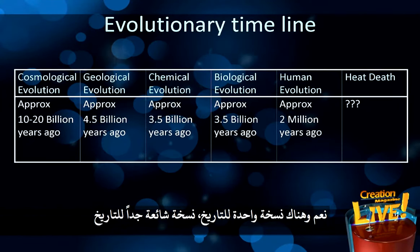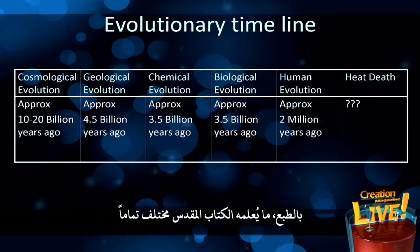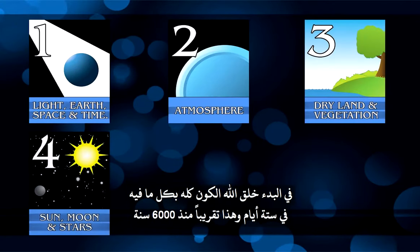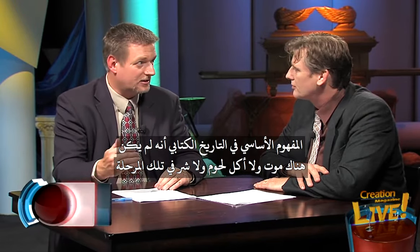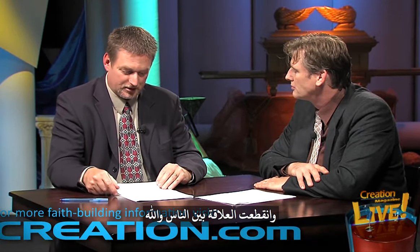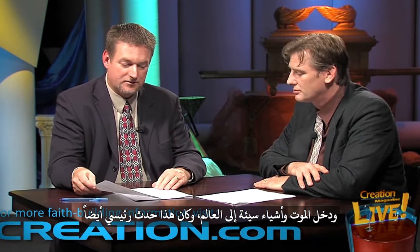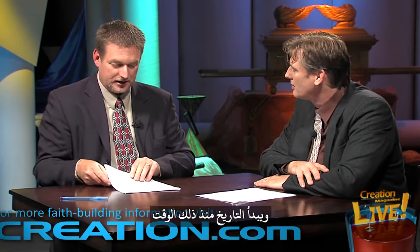That's one version of history — a very popular version. Of course, the Bible teaches something very different. It begins with creation: God creates the entire universe in six days, approximately 6,000 years ago — you add up the chrono-genealogies in Genesis 5 and Genesis 11 and get about 6,000 years. Everything is originally very good. No death, no carnivorous activity, no evil at that point. Then man sins, rebels against God, and the relationship between people and God is broken. Death and bad things enter the world.